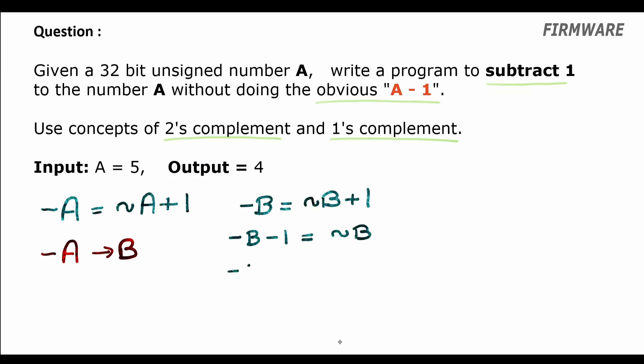Now we replace b with minus a here. Then what do we have? We have minus b minus 1 equal to inversion of minus a. Again, replacing b here with minus a as well, we have minus of minus a minus 1 equal to inversion of minus a.